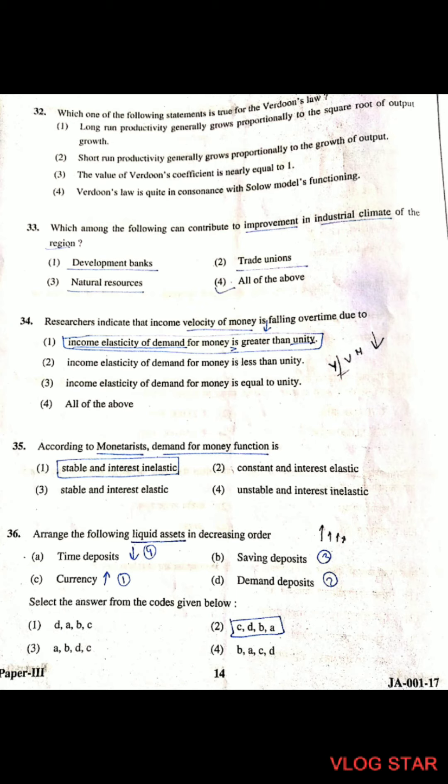Question 34: Research indicates that the income velocity of money is falling over time because the income elasticity of demand for money is greater than unity.